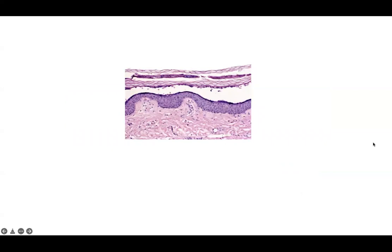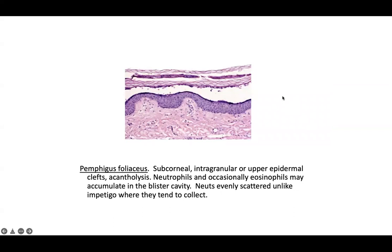What's going on here? You notice a space right above the granular layer, some stratum corneum with a basketweave pattern, some compact parakeratosis, and more stratum corneum. So this is a split right above the granular layer — a very superficial blister pattern. Pemphigus foliaceus affects desmoglein 1, and that's why you're getting a split right below the stratum corneum — subcorneal or intragranular.